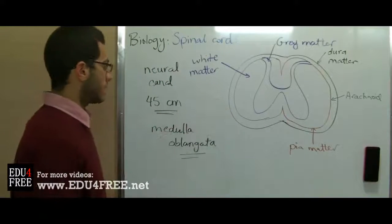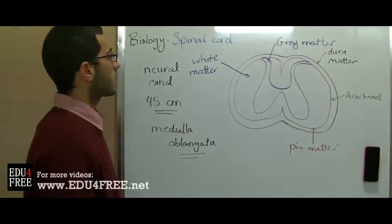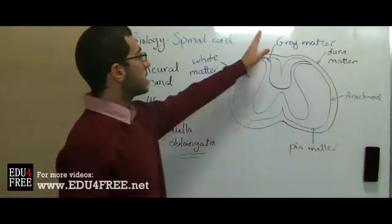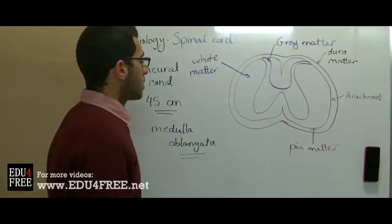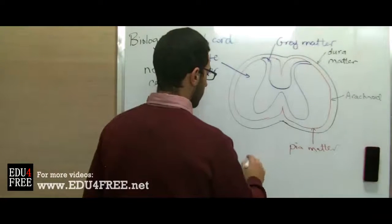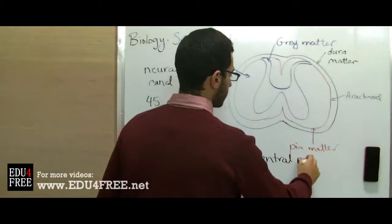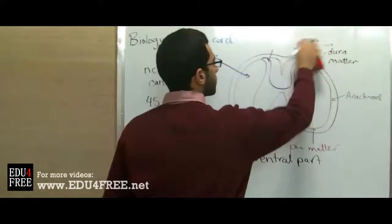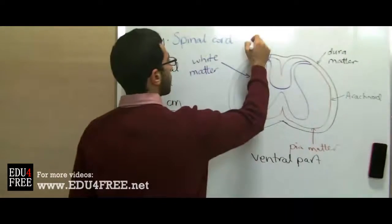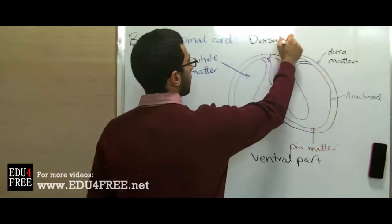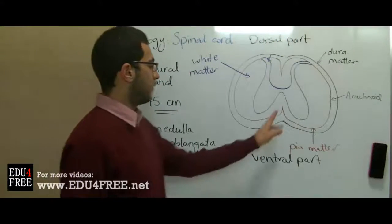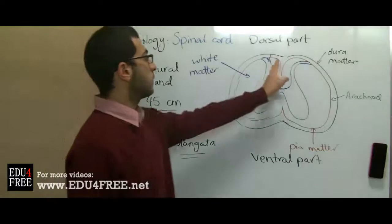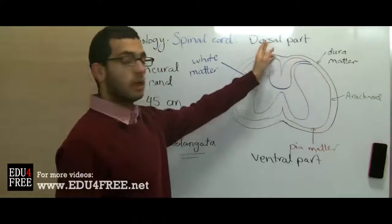This drawing of the spinal cord is viewed from above, looking this way. So this is the back and this is the abdomen. This part is the ventral part, and this part is called the dorsal part. So we have a ventral fissure, the one facing the ventral part, and we have a dorsal fissure at the part facing the dorsal part.